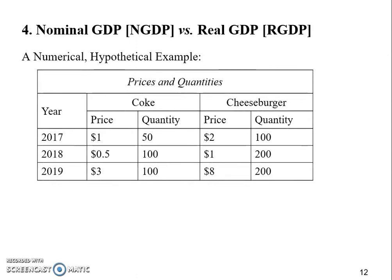We use the hypothetical example because it helps us simplify our analysis and calculation. In this hypothetical economy, you'll find that it produces only two goods: Cokes and cheeseburgers. You don't have to worry about a third product — just Cokes and cheeseburgers. We have three years from 2017 to 2019, and for each year you find the price and the quantity for each good.